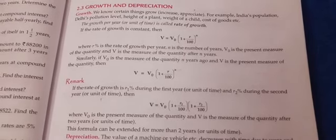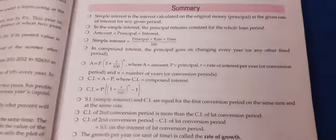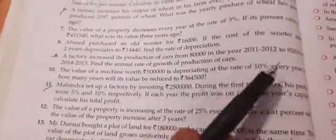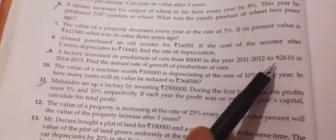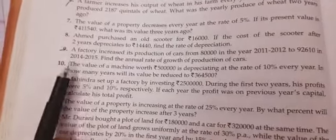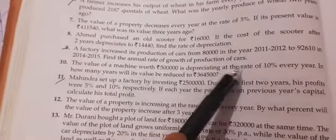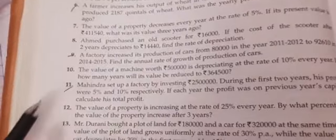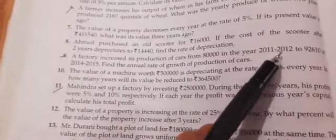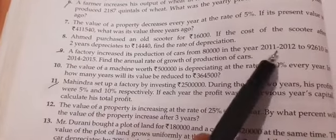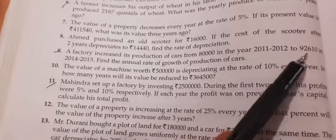This is question number 9: A factory increased its production of cars from 80,000 in the year 2011-12 to 92,610 in 2014-15. Find the annual rate of growth of production of the cars. Let's see what is given. In year 2011-12 the production was 80,000 and in year 2014-15 the production is 92,610.